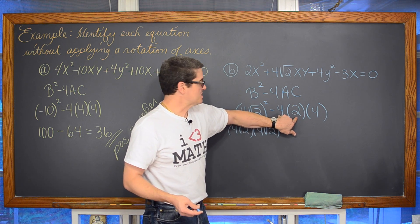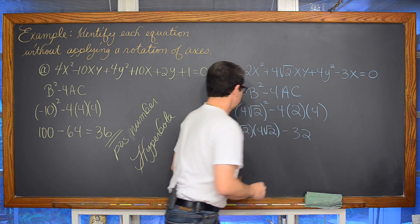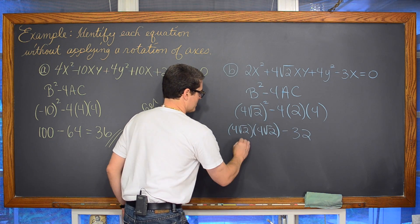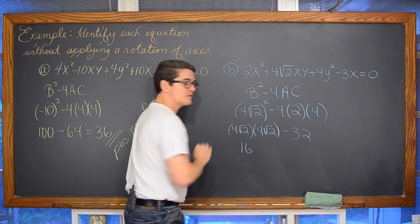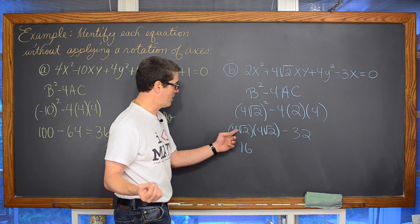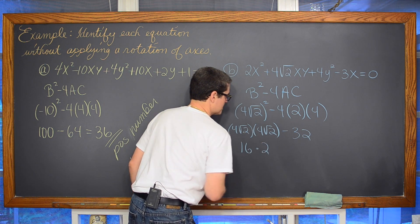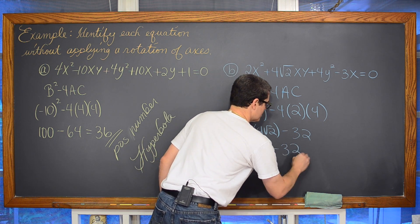Over here we've got 4 times 2, which is 8, and 8 times 4 is 32. Now, 4 times 4 is 16, and the square root of 2 times the square root of 2 is the square root of 4, which is 2. Squaring a number and taking the square root are inverse math operations. So we have 16 times 2 minus 32.